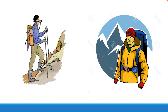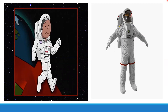Do you know why mountaineers carry oxygen cylinders while climbing high mountains? As we go up, the quantity of oxygen goes on decreasing. Breathing becomes very difficult. That is why mountaineers carry oxygen cylinders on their backs while climbing high mountains. The astronauts also carry oxygen cylinders for the same reason. The atmosphere is thicker near the ground and becomes thinner as we go up, which means oxygen becomes lesser as we go higher.